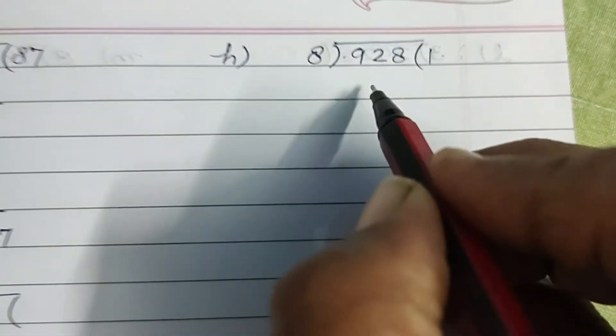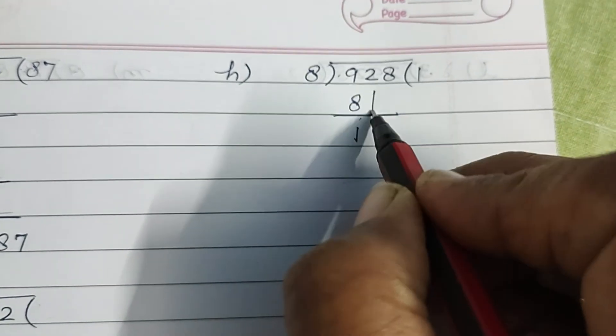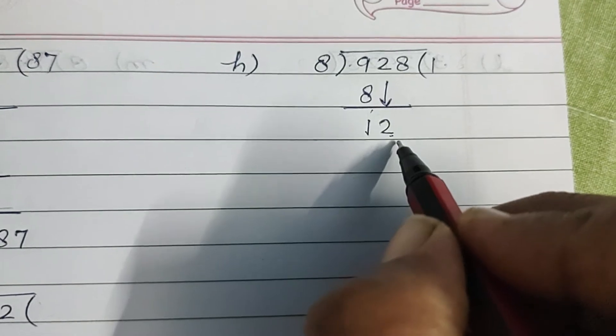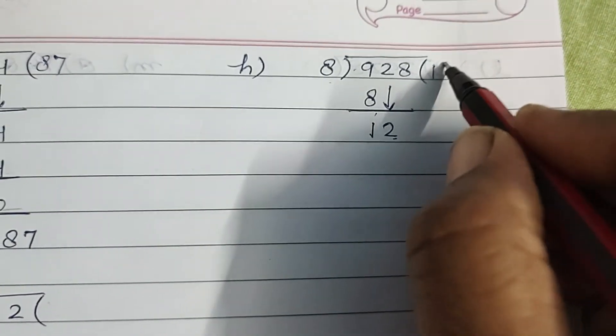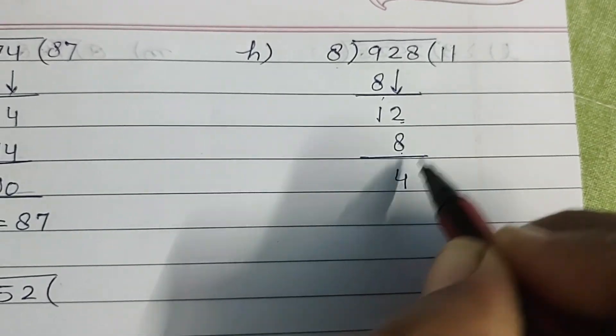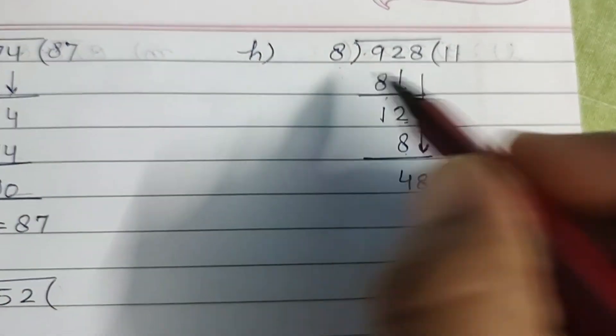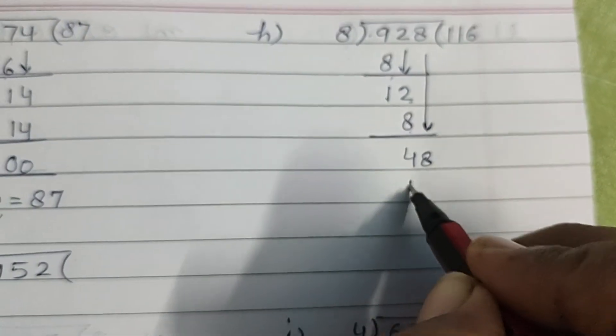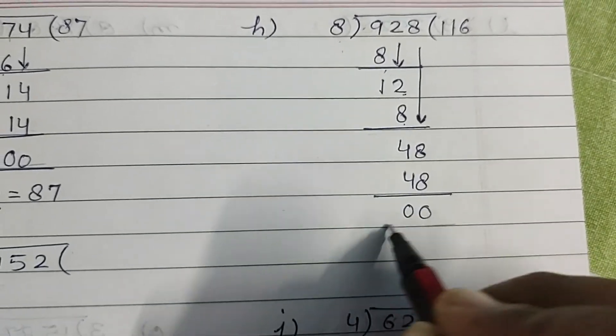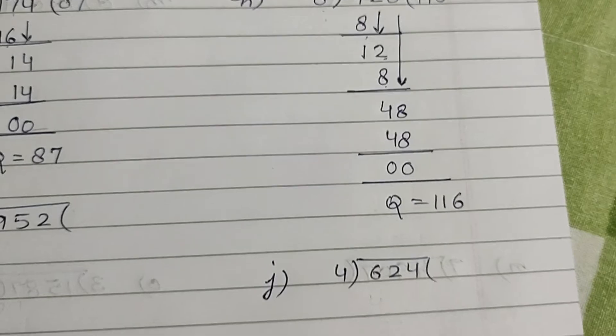Now 8×1, 8. 9 minus 8, 1. Bring 2 down, sorry, 2 aaya niche, ho gaya 12. 8×1, 8. 12 minus 8, 4. Bring 8 down, ho gaya 48. 8×6, 48. 48 minus 48, 0. Quotient is equal to 116.